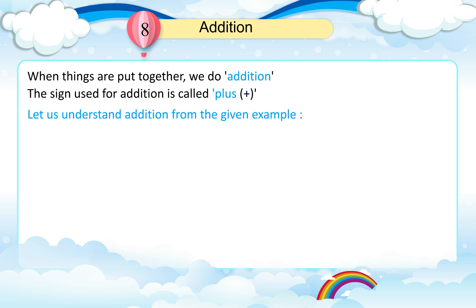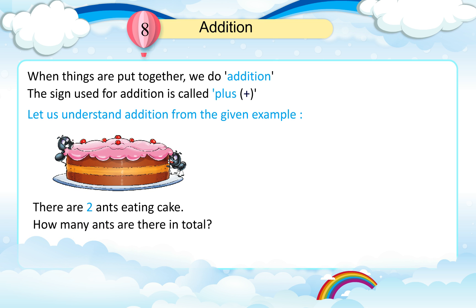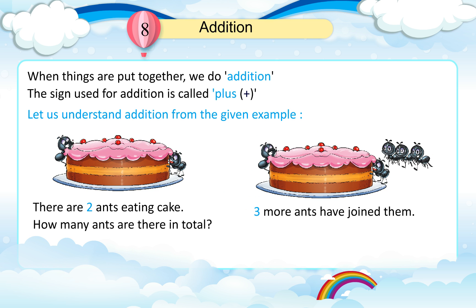Let us understand addition from the given example. There are two ants eating cake. Three more ants have joined them. How many ants are there in total?